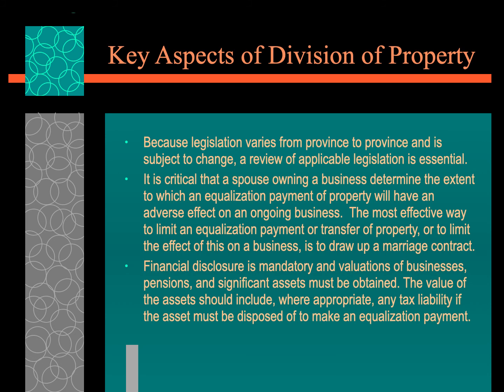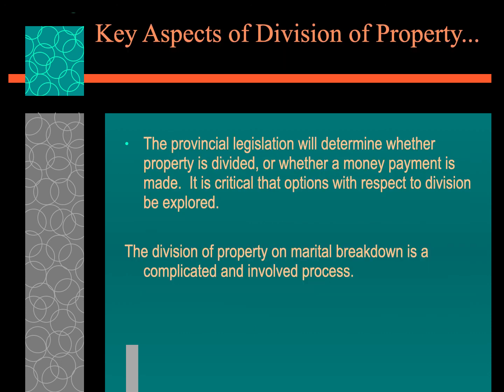A critical aspect of division of property is for a spouse who owns a business to determine the extent to which equalization payment of property will have an adverse effect on the ongoing business. The most effective way is to limit the equalization payment, with some financial disclosure required. The provincial legislation will determine whether property is divided or whether a money payment is made. The division of property on marriage breakdown is complicated and a very involved matter.